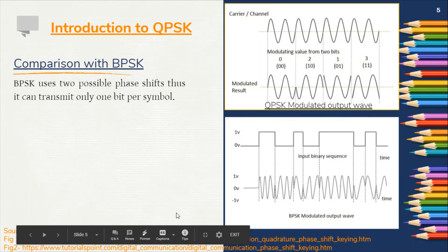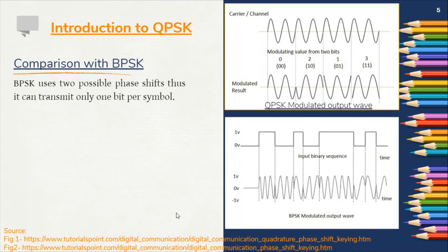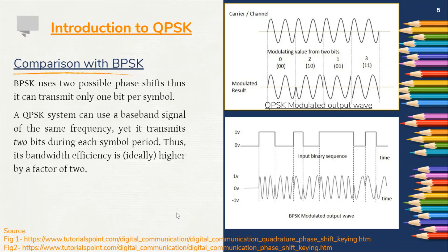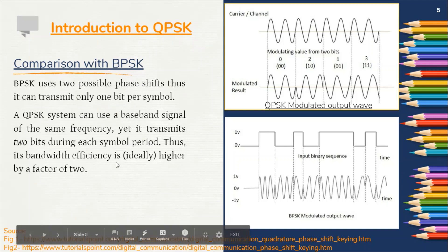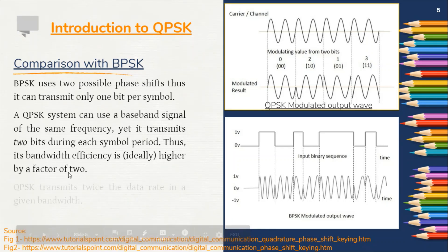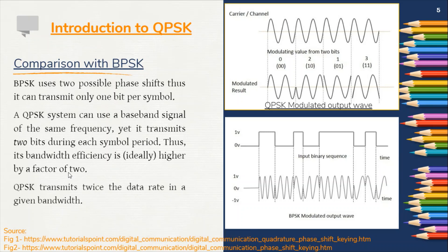Now comparing QPSK with BPSK. BPSK transmits only one bit per symbol, that means we can have only two possible phase shifts, while QPSK as discussed earlier modulates two bits at once. Thus the bandwidth efficiency is ideally higher by a factor of two. QPSK transmits twice the data rate in a given bandwidth, which can also be stated that for a given data rate it uses half the bandwidth as compared to BPSK.